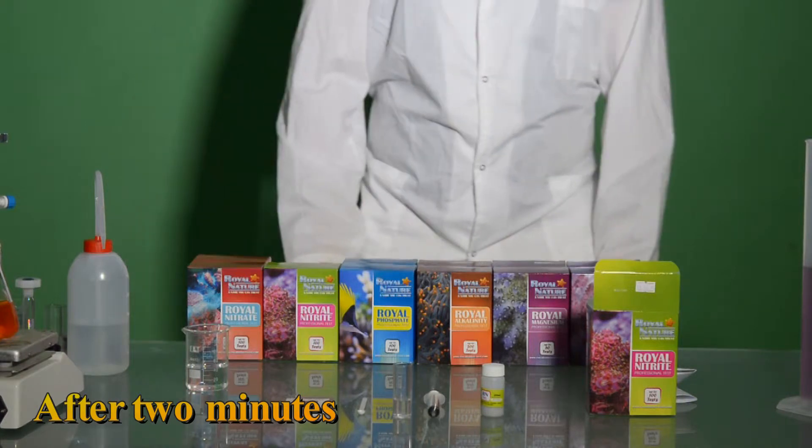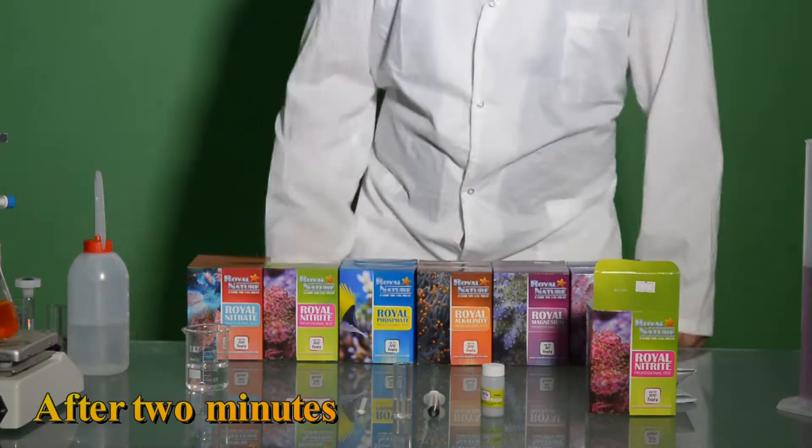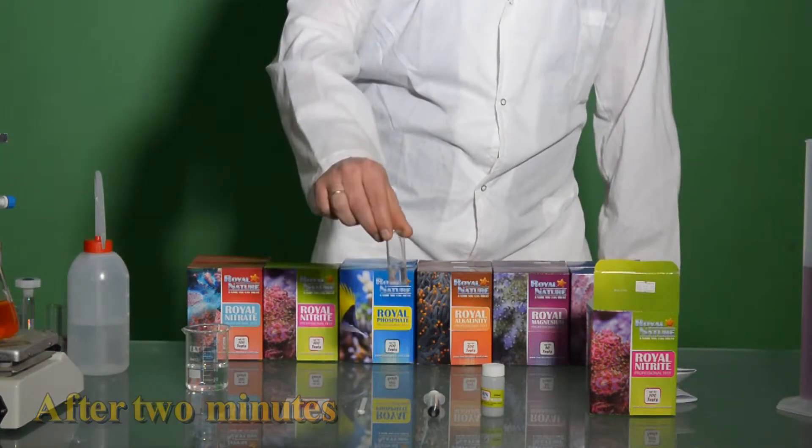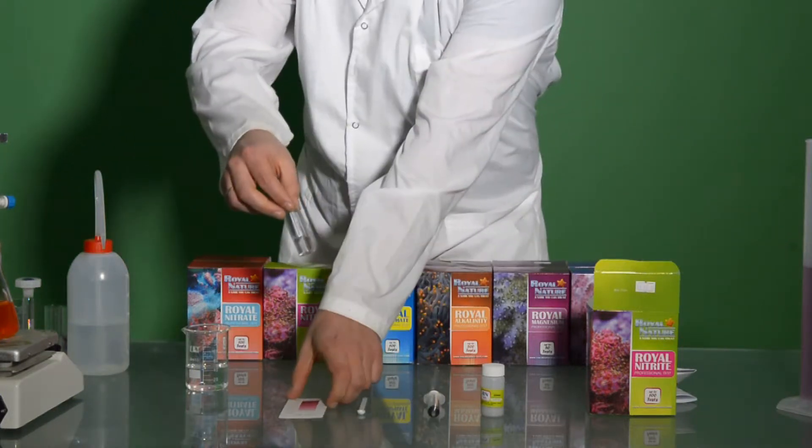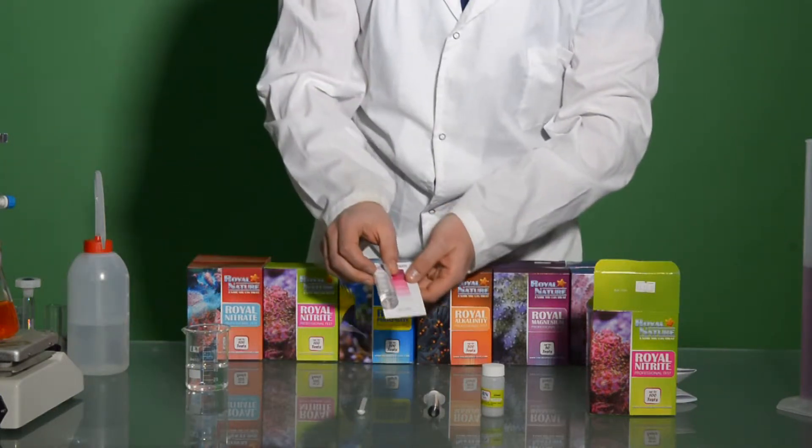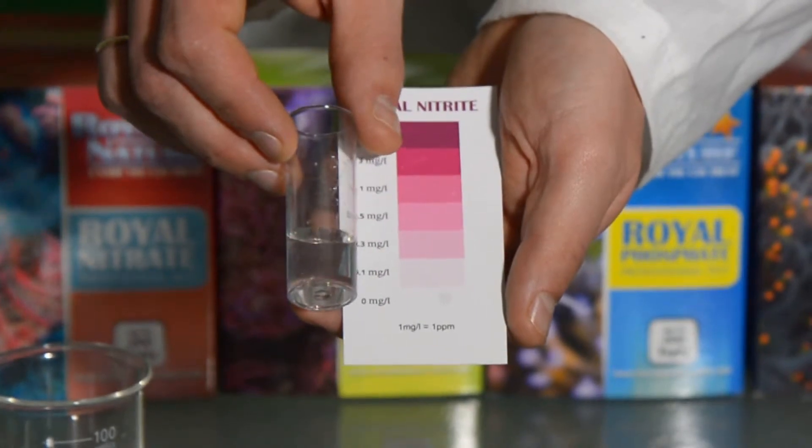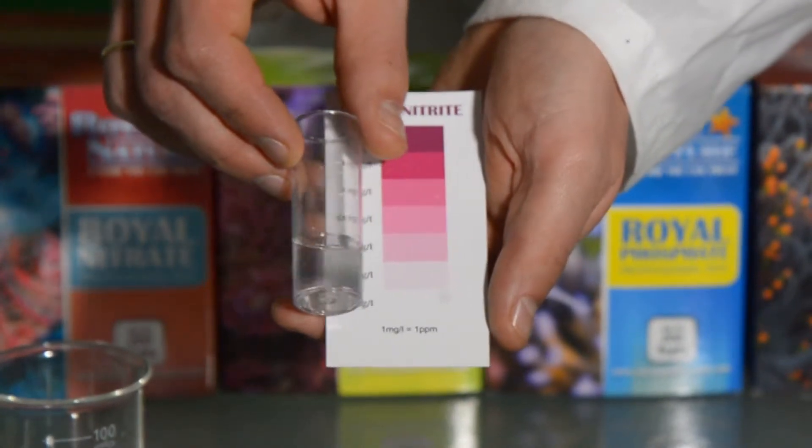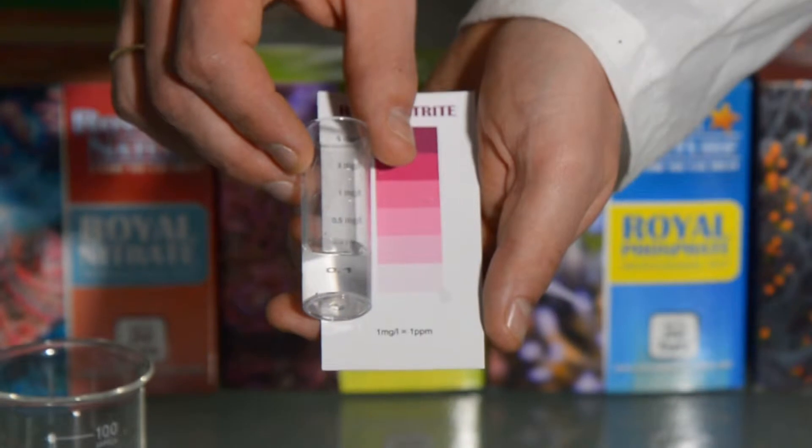hold the test vial next to the supplied color chart on a white part of the chart and compare the colors looking from the side of the test vial. Read the corresponding nitrate contents. An intermediate color corresponds to intermediate nitrate contents.